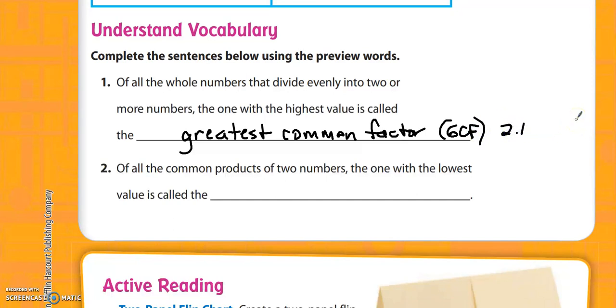And then from lesson 2.2, it's of all the common products of two numbers, the one with the lowest value is called the least common multiple. And that is commonly referred to as the LCM. And that's going to be from lesson 2.2.